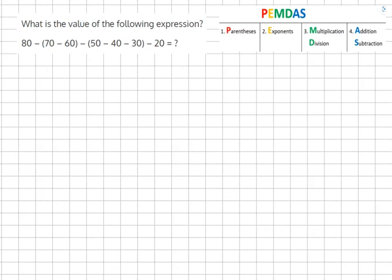So as always, we're going to start off with the parentheses. So the equation becomes 80 minus 70 minus 60, which gives us 10 minus 50 minus 40 minus 30.